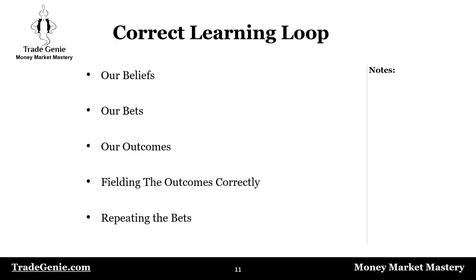The correct learning loop is: first, evaluate your beliefs — there's a lot of work here since many beliefs are wrong. Second, evaluate your bet sizes. Then the outcome comes, and you field the outcomes correctly. That's what we need to do — field the outcomes correctly and then repeat the bets. This is the correct learning loop.